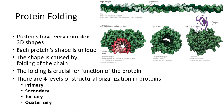Protein folding is complicated. There are four different levels of structural organization in proteins: primary, secondary, tertiary, and quaternary. The primary level is about the sequence of amino acids in the chain. The secondary, tertiary, and quaternary levels are all about how the protein folds up and comes together to make its final shape. We'll go through each of these levels in turn.